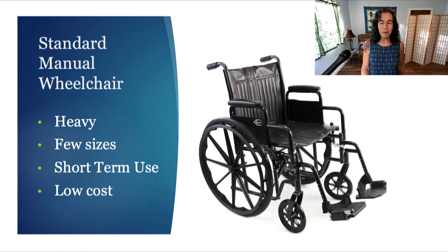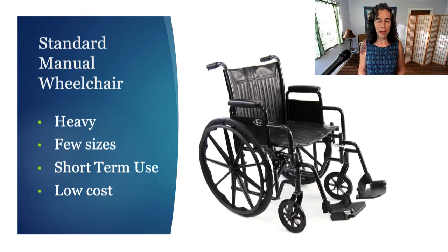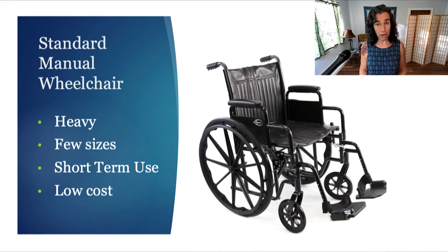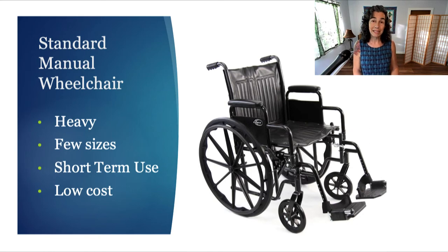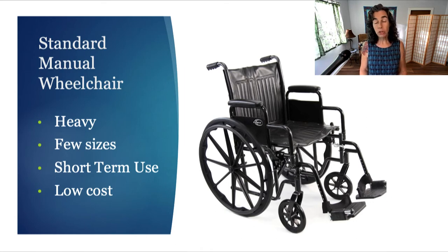The standard manual wheelchair is what we see in airports or available for rent. It is a seating option that's good for the short term rather than the long term. It is heavy, which is a drawback especially if you're trying to put it into a vehicle. There are only a few standardized sizes. It is low cost, which makes it desirable in some circumstances, but it's primarily for short-term use. The weight is more than 34 pounds, it typically has a vinyl or fabric seat and back, and it runs about $250 to $500.